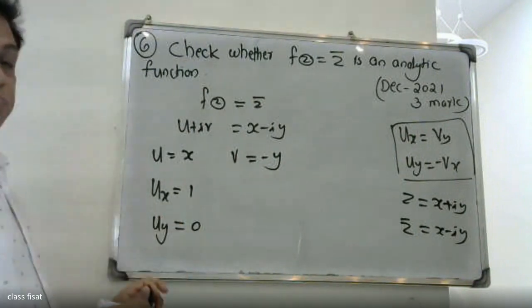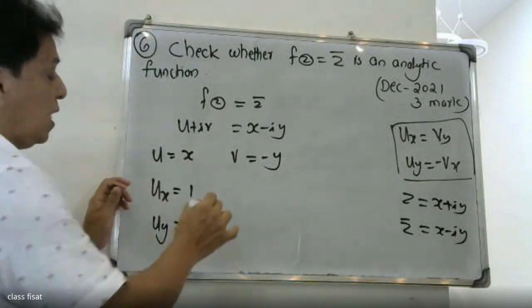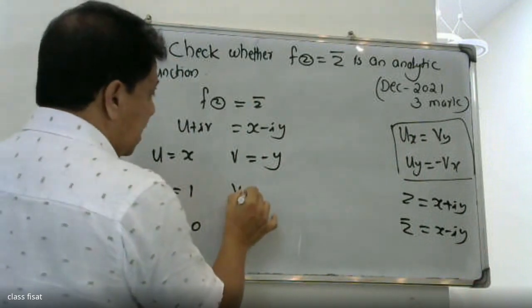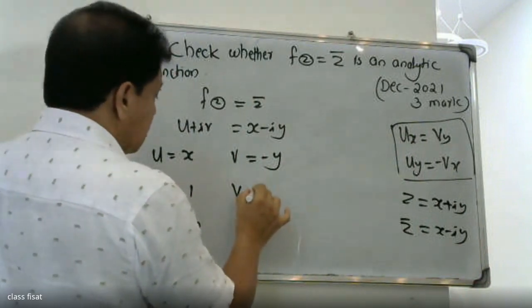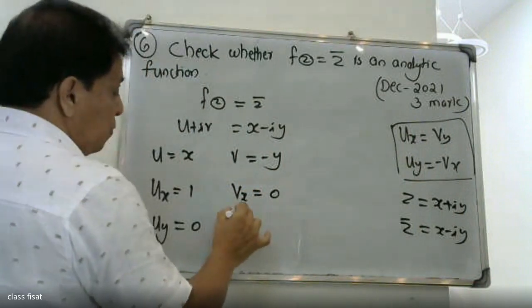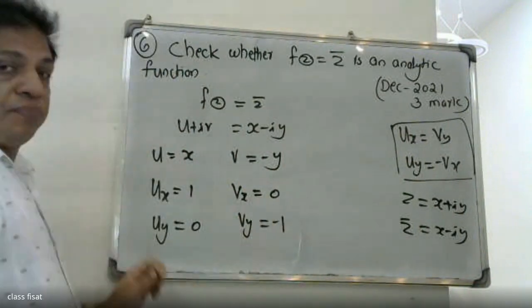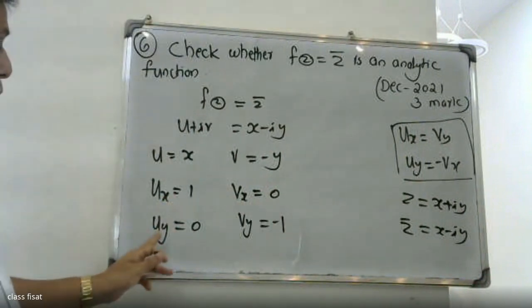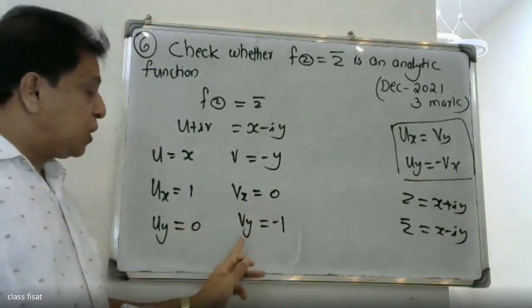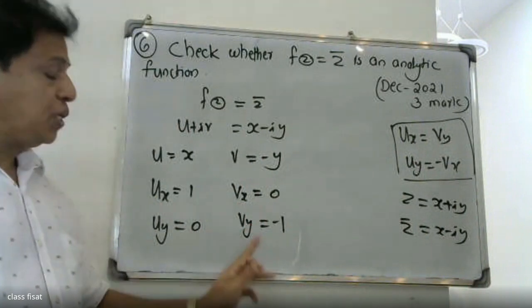uy is equal to zero. For v, differentiating with respect to x: vx is equal to zero. And vy is equal to minus one.